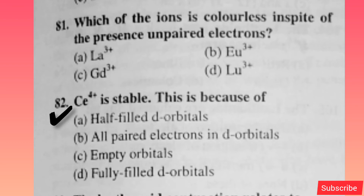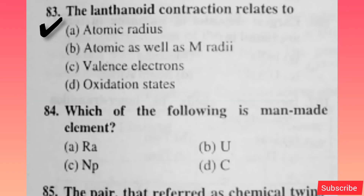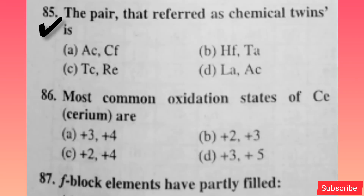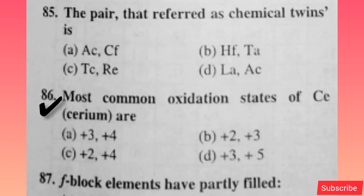Ce4+ is stable — this is because of — option C is correct. The lanthanide contraction relates to — option B is correct. Which of the following is a man-made element? Option C is correct. The pair referred to as chemical twins is — option C is correct.